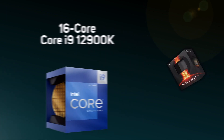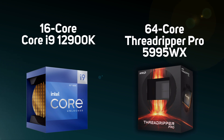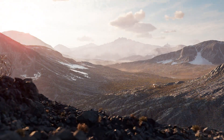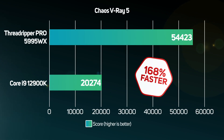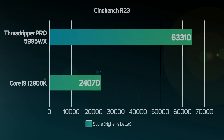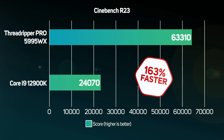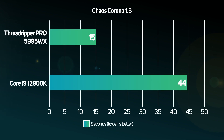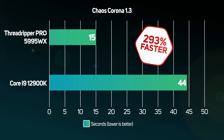Now that we've covered the specification differences, let's look at what they mean in real-world terms. In this comparison we used the 16-core i9-12900K and the 64-core Threadripper Pro 5995WX. Benchmarking the popular rendering engine Chaos V-Ray, we measured a 168% performance increase when upgrading to Threadripper Pro. Running the Maxon Cinebench rendering benchmark showed a 163% performance increase, and benchmarking with Chaos Corona showed an even more incredible 293% reduction in rendering time.